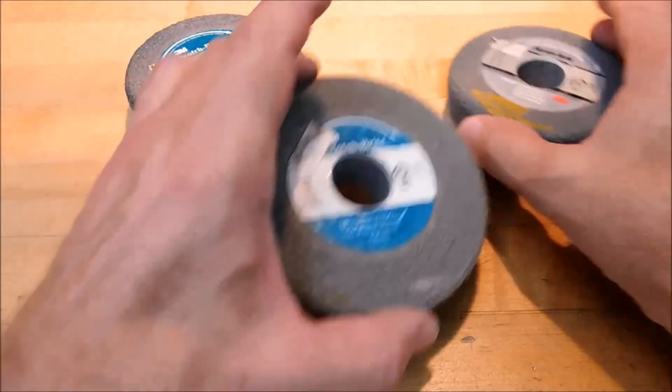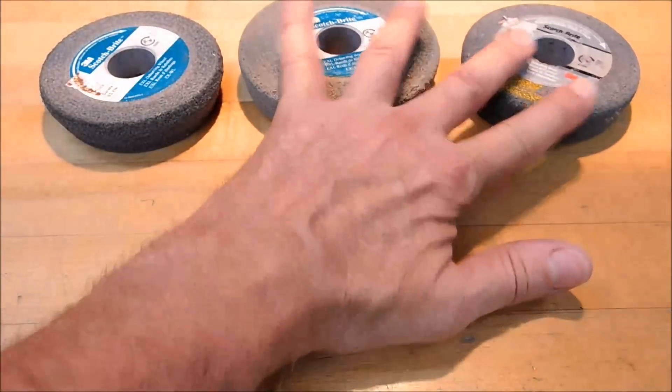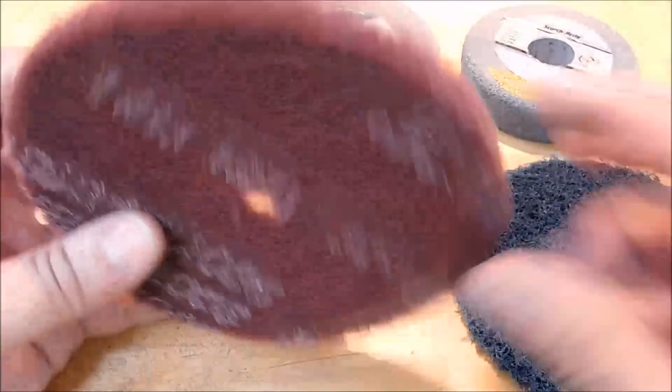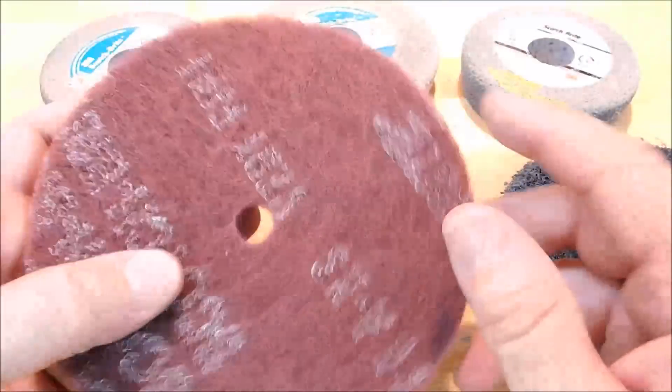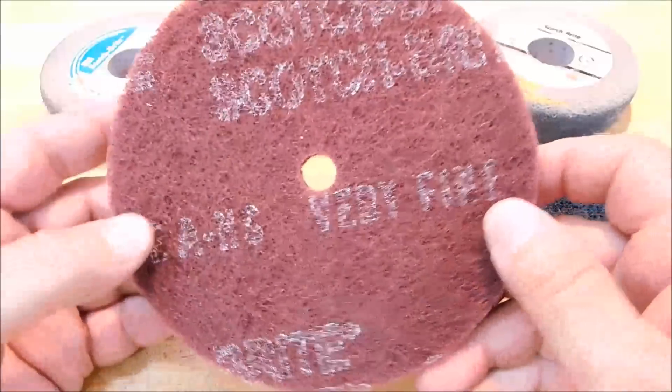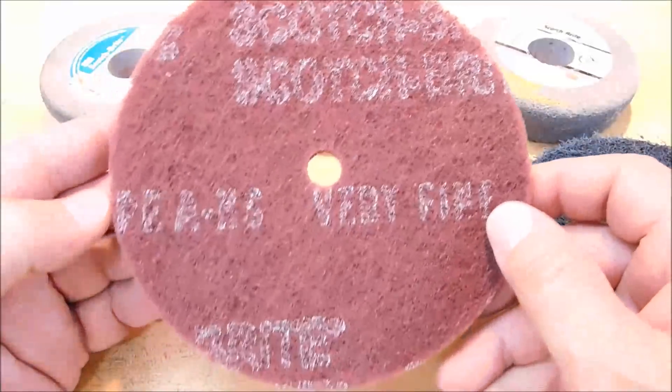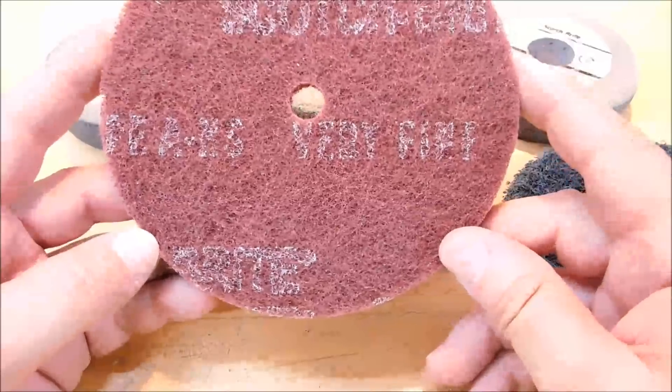Once you've got it deburred, once you've got it buffed down to where you want it, move into a Scotch-Brite like this. This is the same kind of thing that you would put on a floor buffer and buff your floor or do your dishes with. This is a 3M Scotch-Brite product.